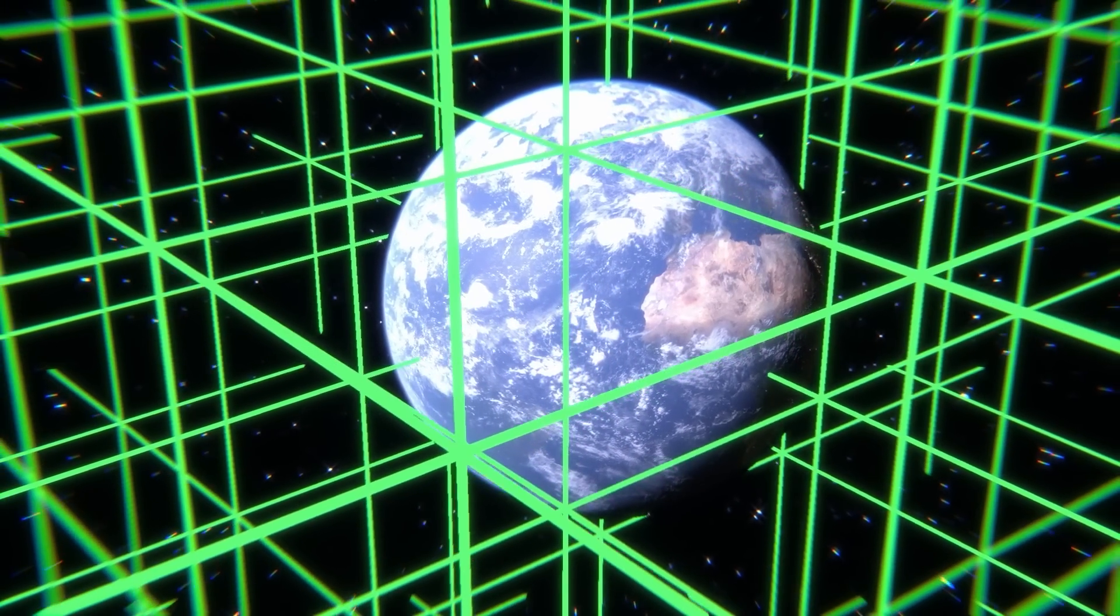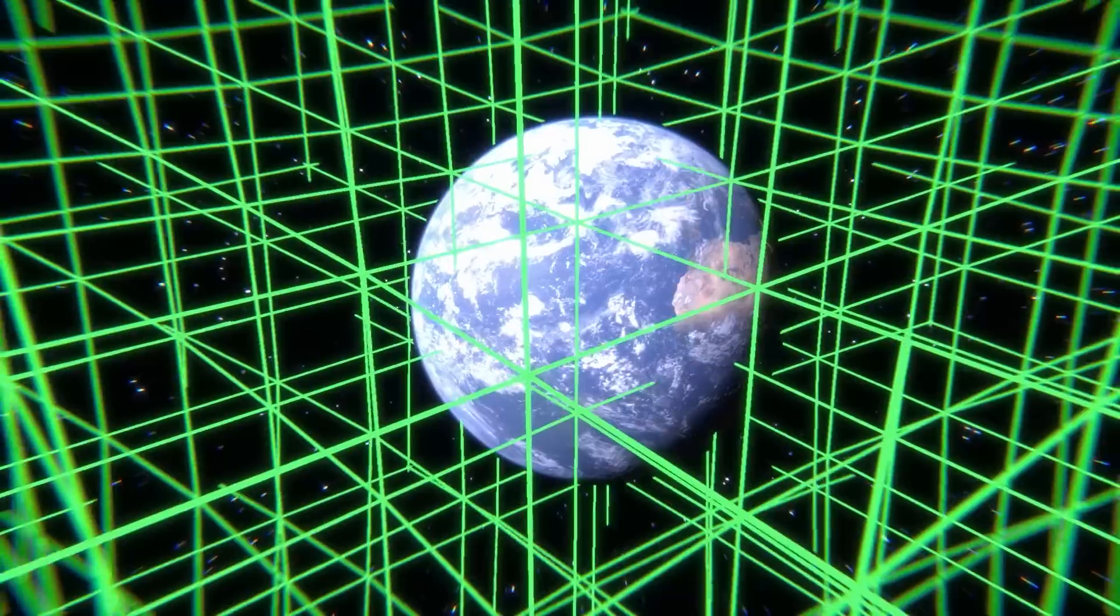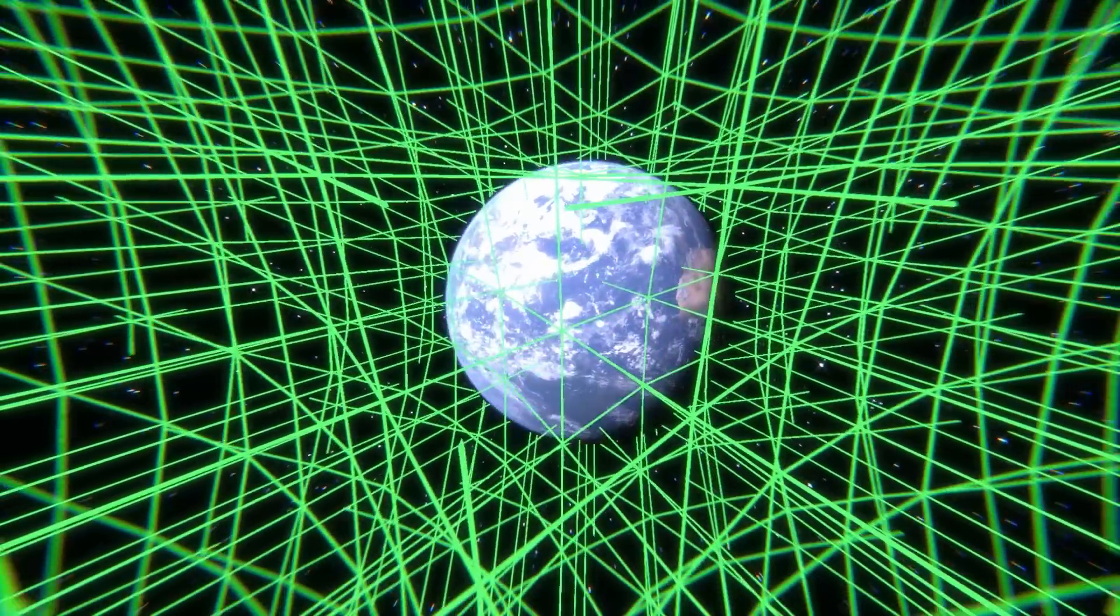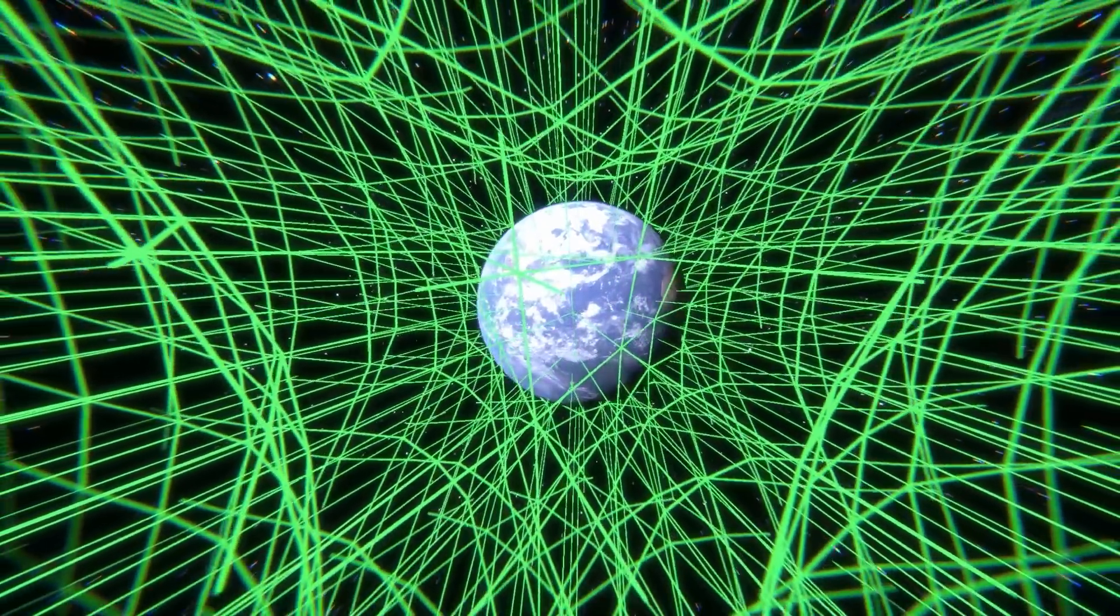Think of gravity like a cosmic tug-of-war where every particle is pulling towards the center. The only shape where all points are equally close to the center is a sphere. It's nature's way of achieving perfect balance.